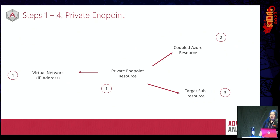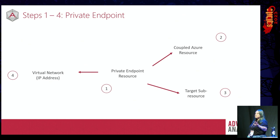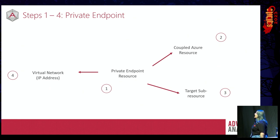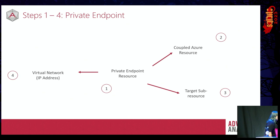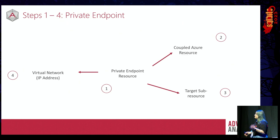So steps one to four, just to recap: we've got a private endpoint resource, a coupled Azure resource, a target sub resource, and a virtual network. I've grouped these together because they're all kind of related to the private endpoint resource itself, and these are all configurations you need to be aware of. That's the easy part. Now we move on to steps five through to seven, which is all centered around DNS — I know everybody's least favorite topic.